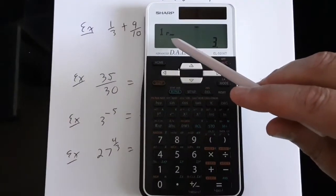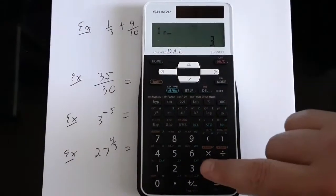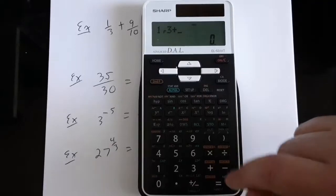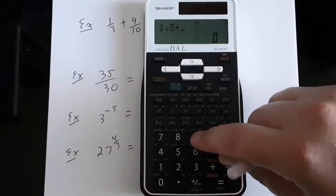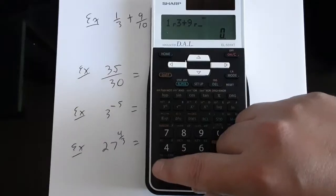And you can now see in the display window a little hook there. That's the fraction line for your calculator. And now I'll just enter plus 9, fraction, 10.